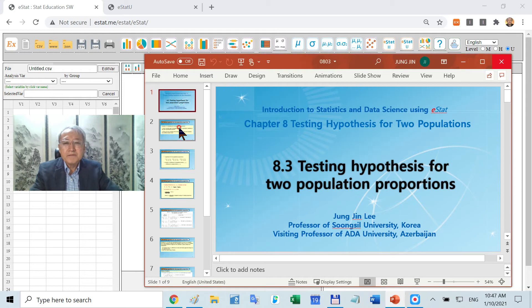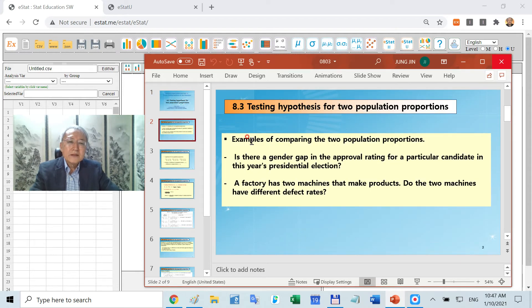Let's consider an example. Consider some election problem. Is there any gender gap in the approval rating? It's a typical example where we have to compare two population proportions. Or there is a factory which has two machines. You want to compare their defective rate. Defective rate is some kind of proportion. It's a population proportion of each machine.